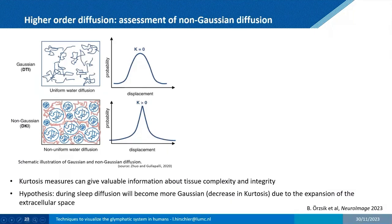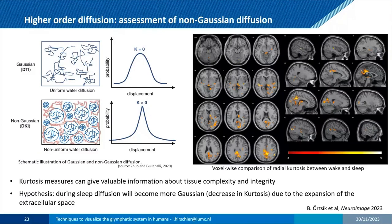You could make diffusion measurements more specific by using higher-order diffusion such as kurtosis imaging. During sleep, you expect more extracellular space, which means water molecules move more freely — so kurtosis should decrease. Kurtosis measures how freely water molecules move: more cells means stronger kurtosis; more extracellular space means more Gaussian diffusion. One study showed that during sleep, kurtosis was more Gaussian and decreased, consistent with expanded extracellular space.